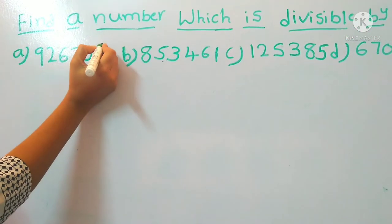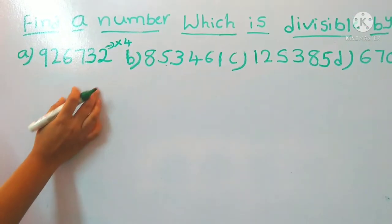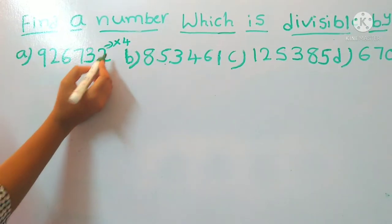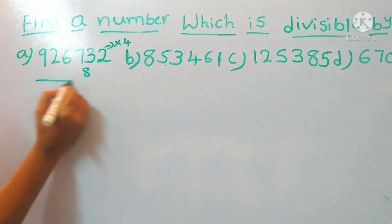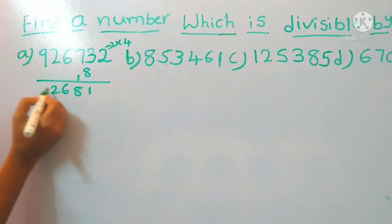So for that you need to multiply the last digit with 4 and add the result to the remaining digits. So 2 for the 8, 8, 6, 2, 9.